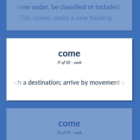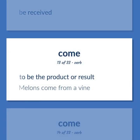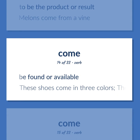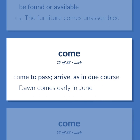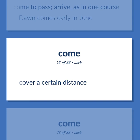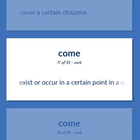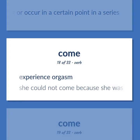To reach a destination; arrive by movement or progress. To be received. To be the product or result — melons come from a vine. To be found or available — these shoes come in three colors; the furniture comes unassembled. To come to pass; arrive as in due course — dawn comes early in June. To cover a certain distance. To exist or occur in a certain point in a series. To experience orgasm — she could not come because she was too upset.